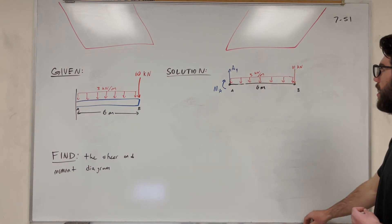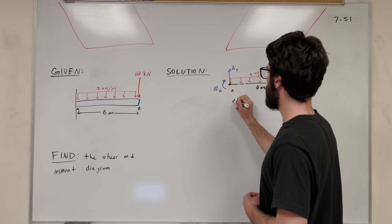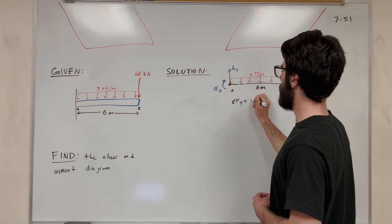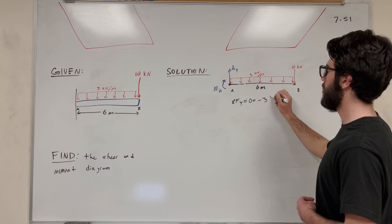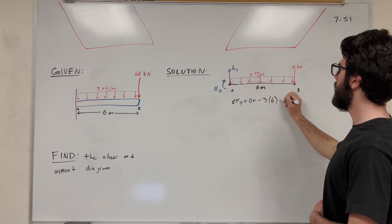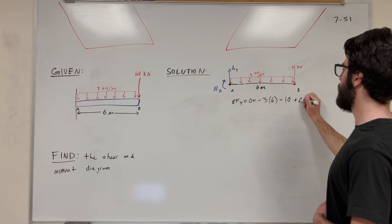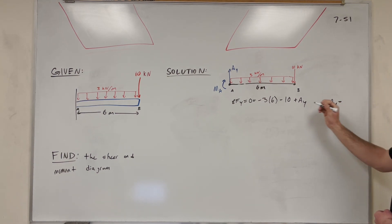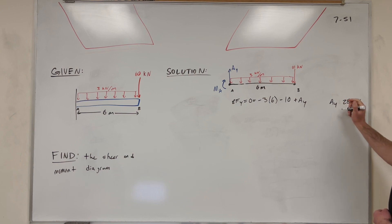We need to find these first before we can draw our shear moment diagrams. Let's do sum of forces in the Y and set it equal to zero. We're at equilibrium. So this distributed load is going to be negative 3 kilonewtons per meter times 6 meters. We also have this 10 kilonewton load pushing down, and then A_Y pushes back up. So A_Y is equal to 10 plus 18, which gives us 28 kilonewtons.